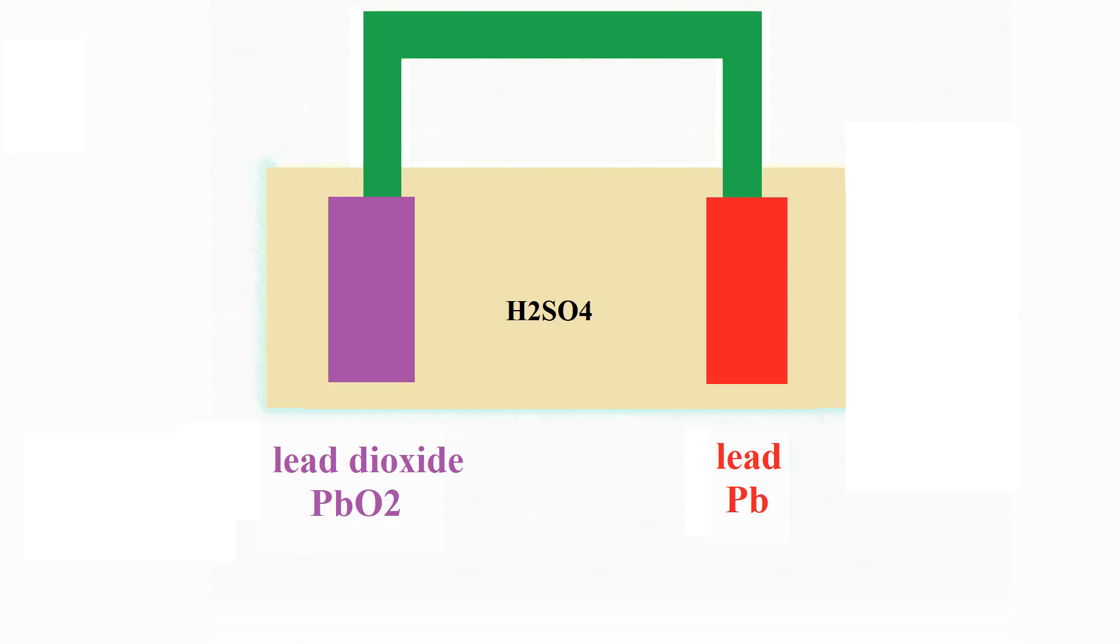There are two terminals: lead, designated as the negative pole, and lead dioxide, the positive pole. These terminals are immersed in a solution of sulfuric acid and water. A chemical reaction takes place that induces electron beads to flow to the positive pole.